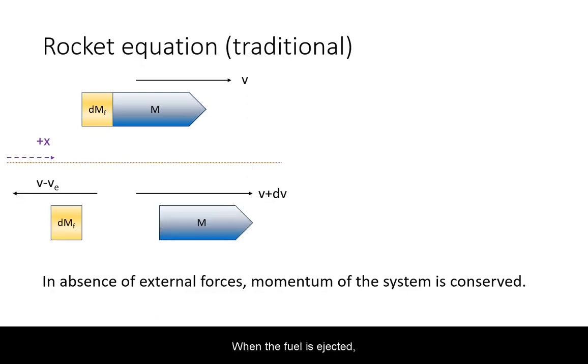When the fuel is ejected, the rocket gains a differential velocity dv. The fuel, previously traveling with velocity v of the rocket, is ejected backwards with exhaust velocity v_e.